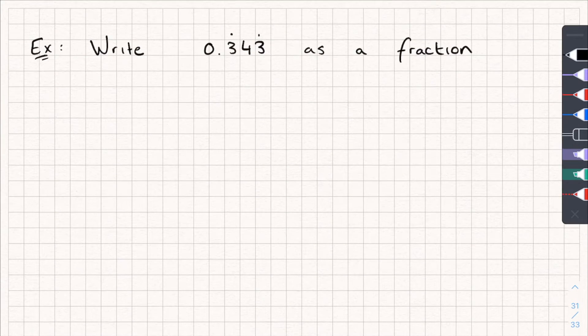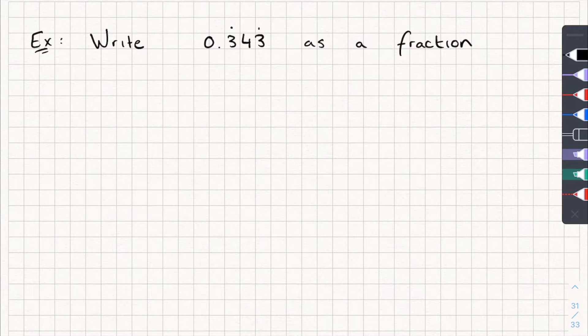Let's take a look at a slightly more different example. So this time we've got 0.343 recurring. And I want to move the whole recurring part, the first bit of it, to the other side of the decimal point. You can see these three digits need to move over to this side. We'll start the way we always do. We'll say let x equal 0.343 recurring.